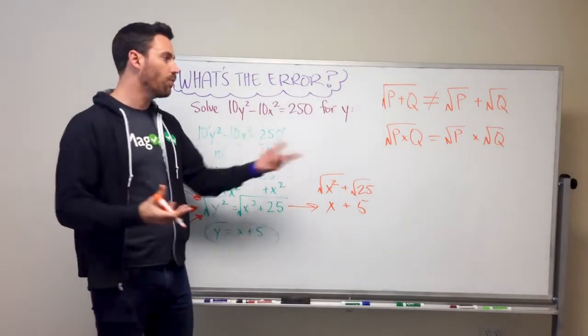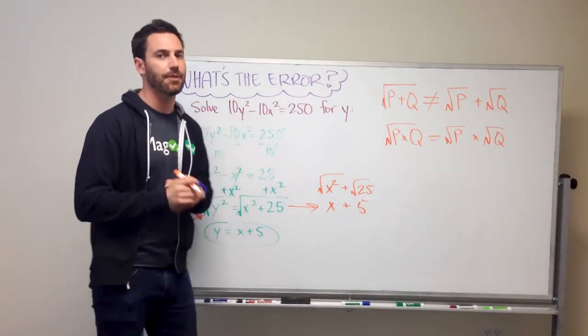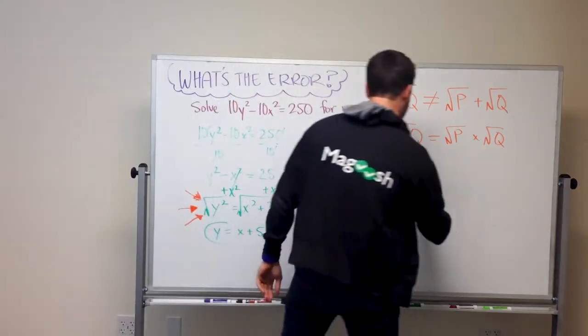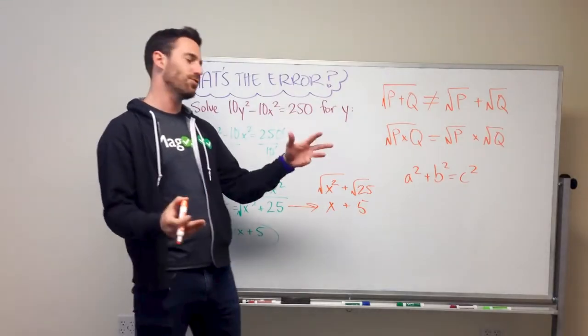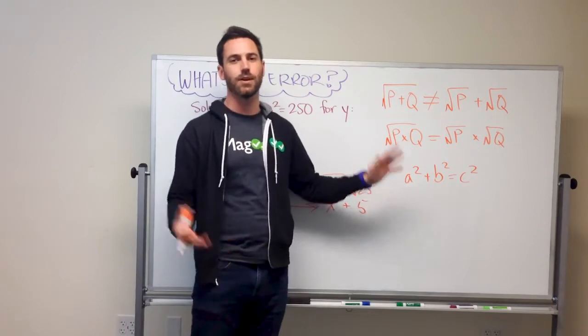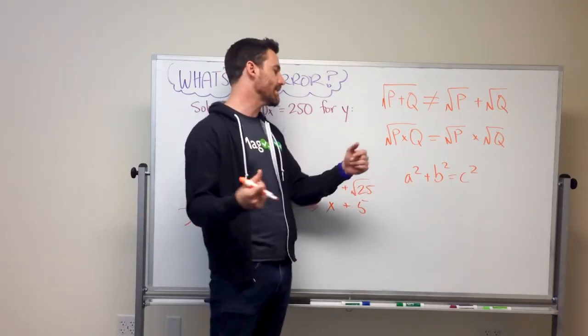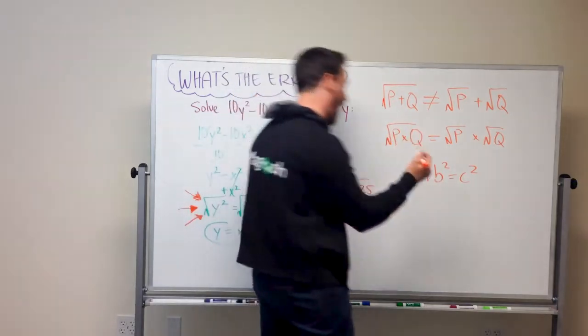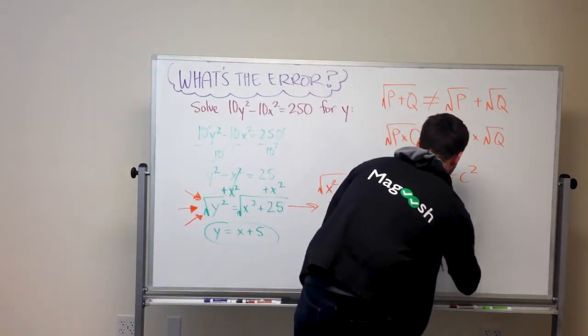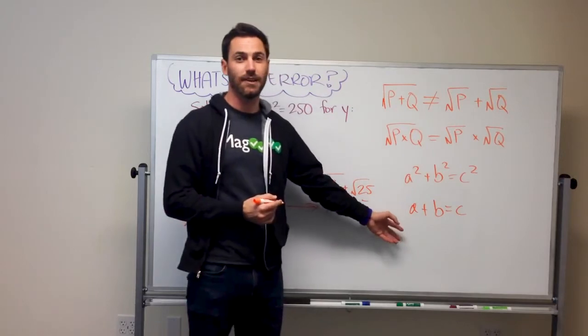And there's a really good way to remember this. If we think about the Pythagorean theorem. Pythagorean theorem is a² + b² = c². Now, Mr. Pythagoras was not a cruel and evil person who wanted to make things more difficult for us. It wasn't like he decided to make it a² + b² = c² and it could actually be a + b = c.